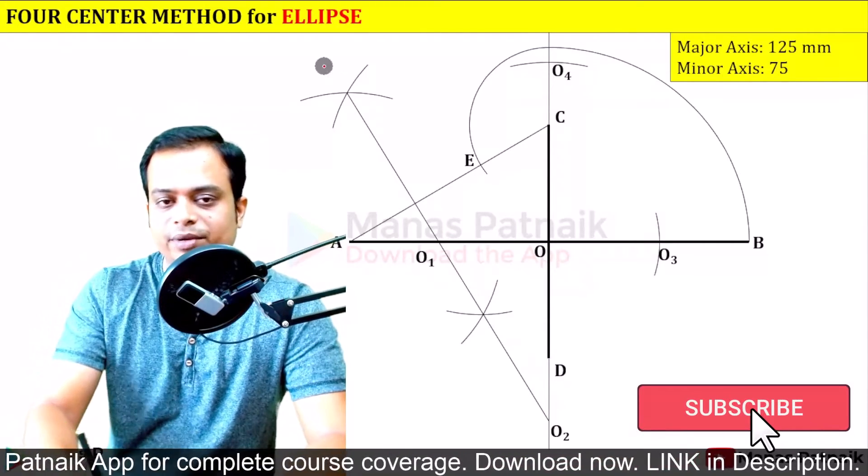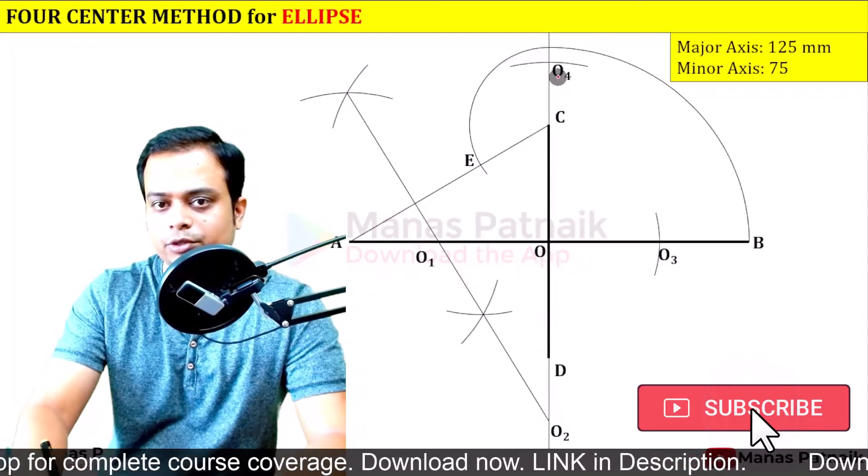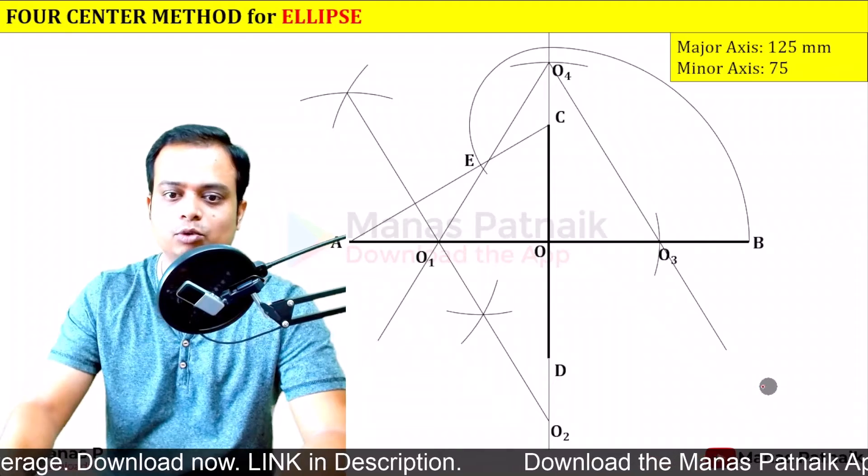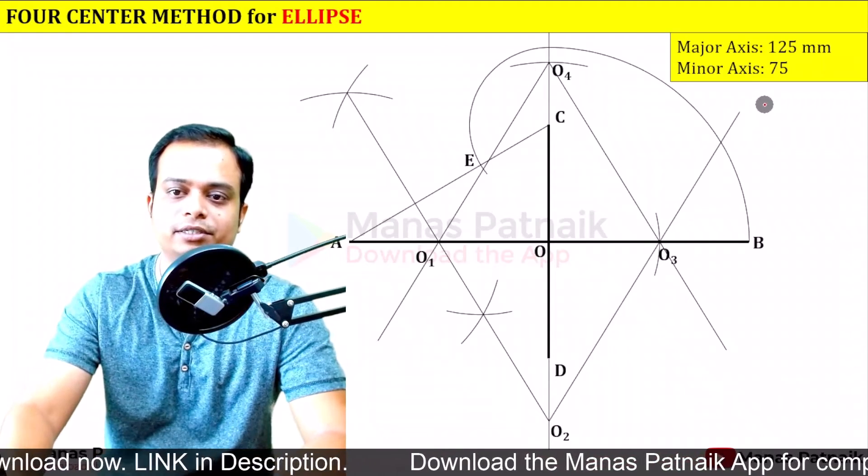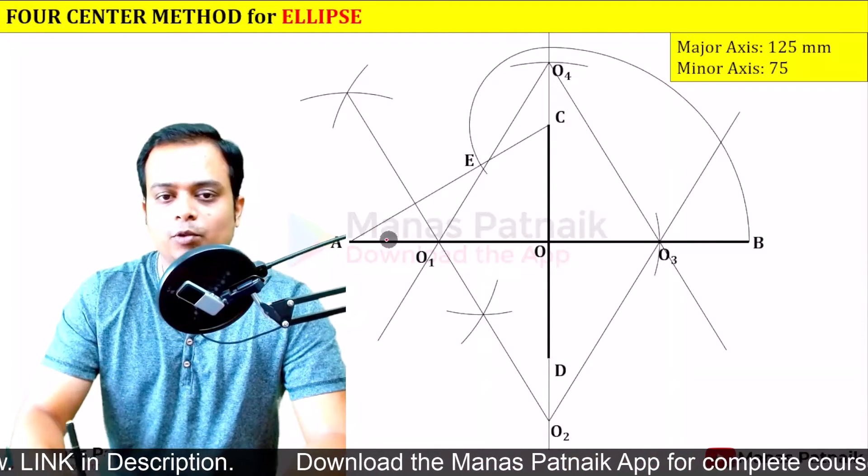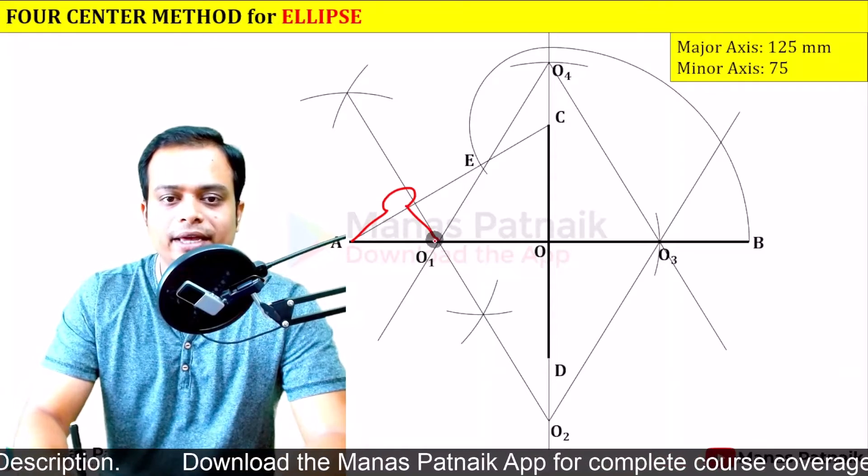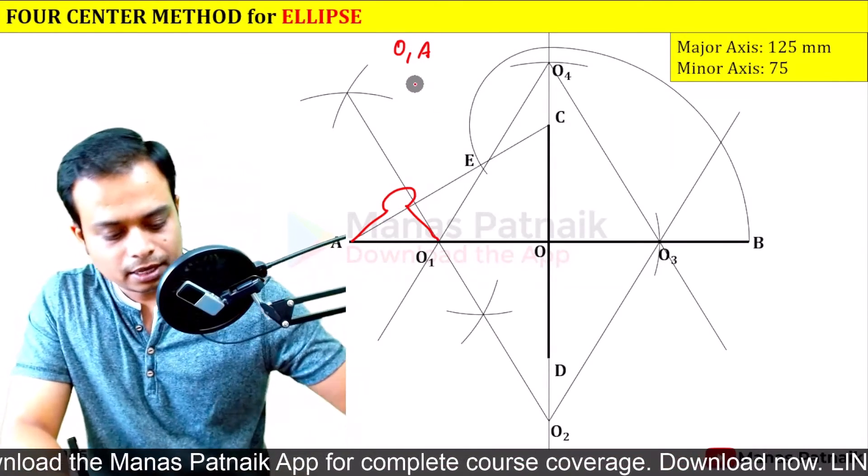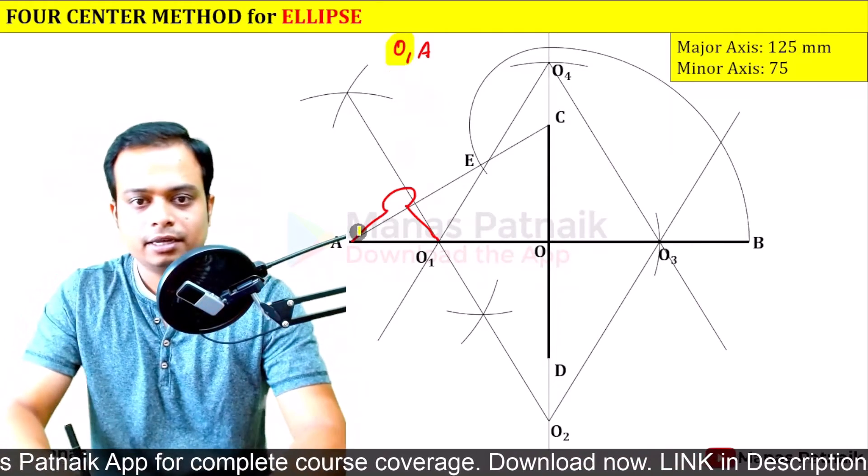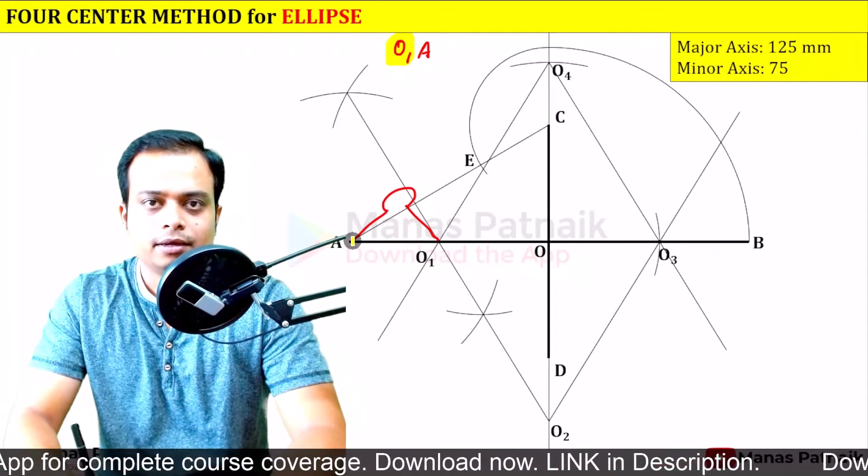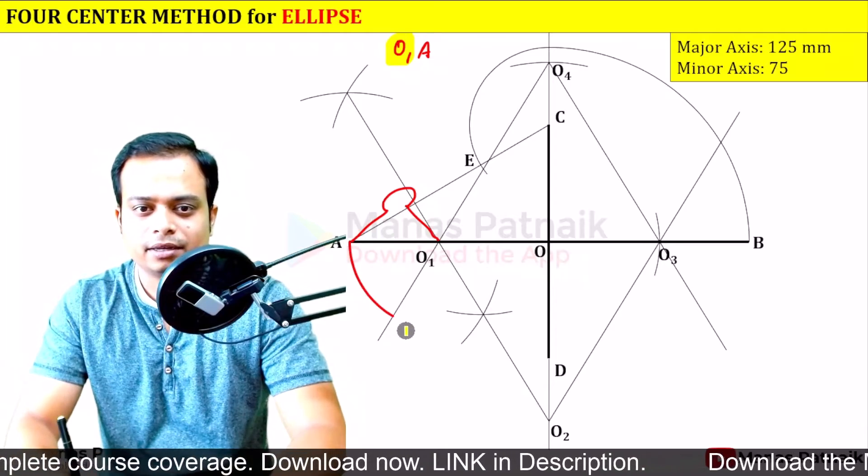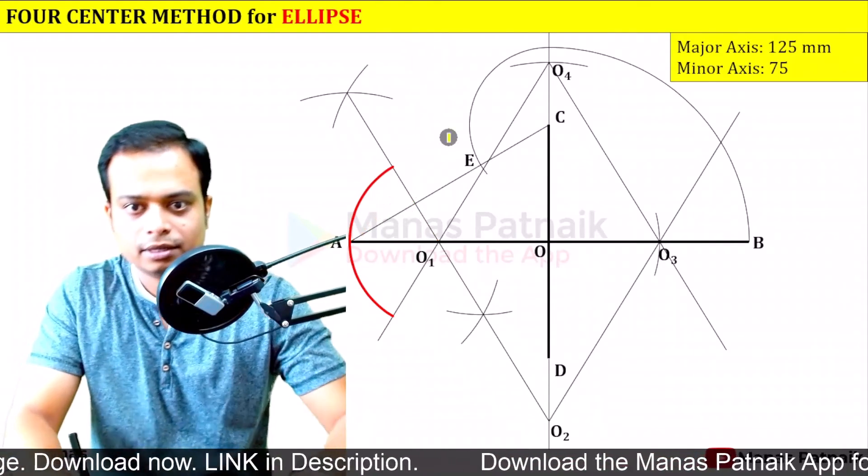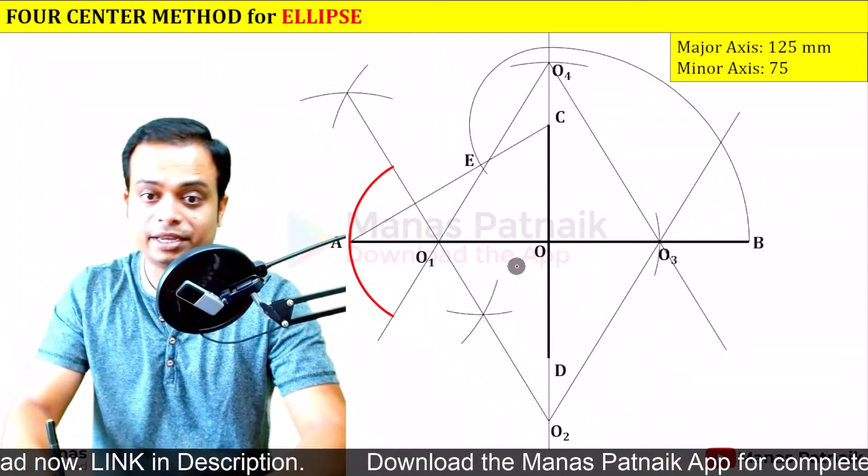O2 and O1 have been connected. So similarly, what we need to do is connect O4 with O1 and O3 this way, extend the line also, no problem. O2 and O3 this fashion, extend. Now with O1-A, O1-A as the radius and with O1 as center, make an arc this way and this way. Done.